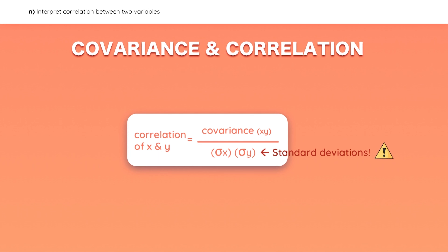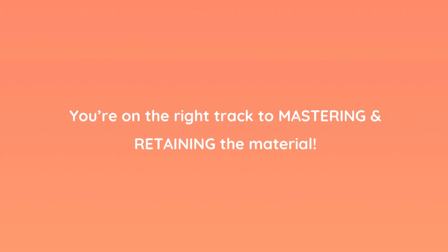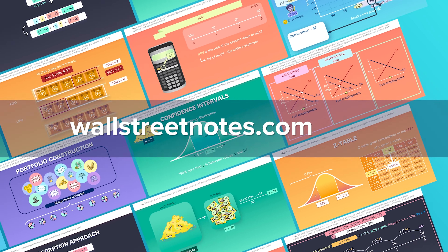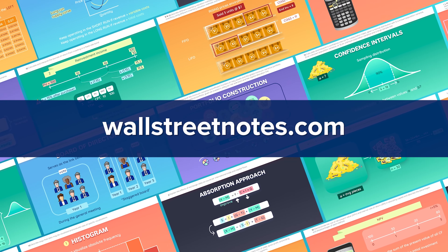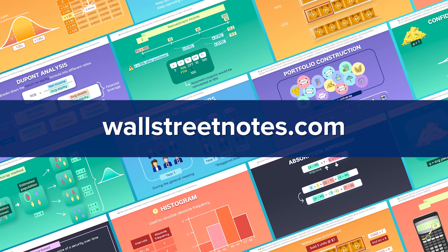Be careful if the problem gives you variances instead of standard deviations. Scatter plots are a great way to visualize the relationship between two variables — these three scatter plots show a positive correlation, a negative correlation, and no correlation. This is the end of the reading. For more videos like these, go to wallstreetnotes.com and master the entire CFA curriculum by watching simple animated videos.